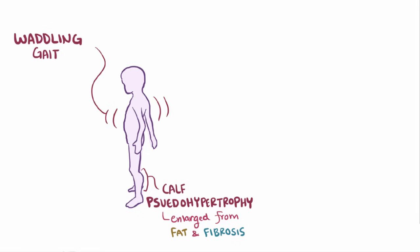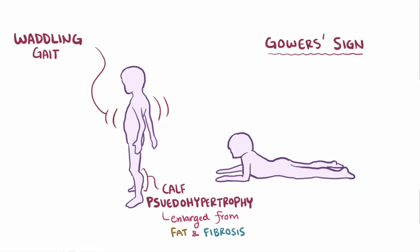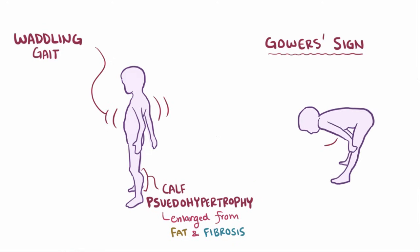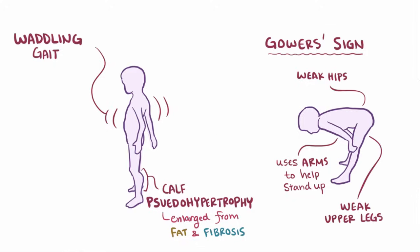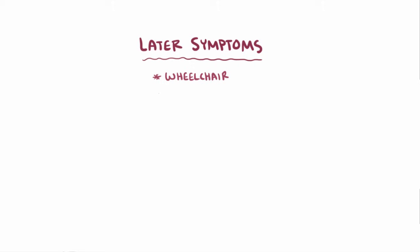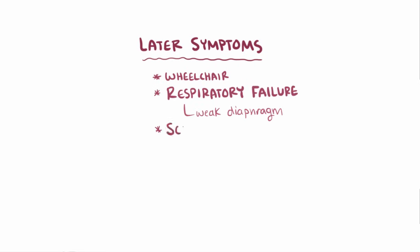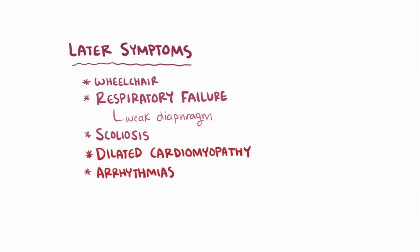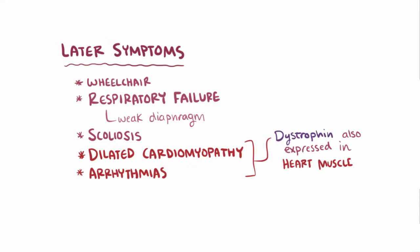Another classic sign of Duchenne muscular dystrophy is Gower's sign, where if a child is lying flat on their stomach, they'll try to slowly stand up with the help of their arms because of weak muscles around the hips and upper legs. Later symptoms include needing a wheelchair because of severe weakness, developing respiratory failure because of a weak diaphragm, scoliosis, and developing dilated cardiomyopathy and arrhythmias, since the dystrophin protein is also expressed in heart muscle. Unfortunately, these complications often lead to a shortened lifespan.